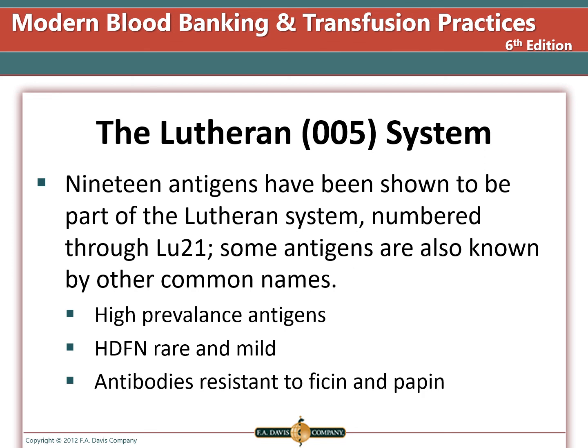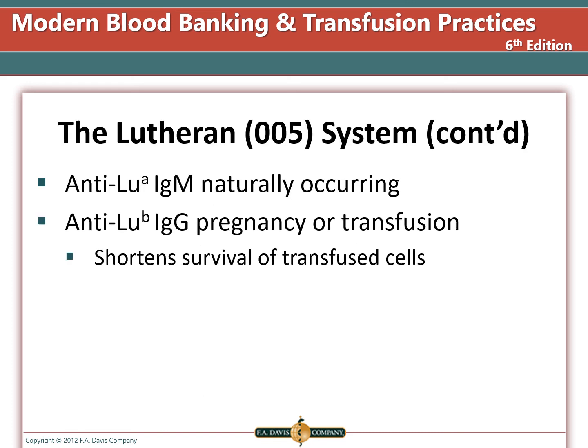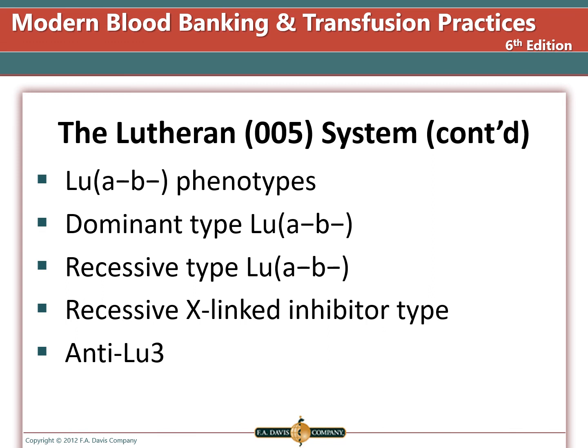The Lutheran system has 19 antigens, mainly high-prevalence. Lutheran A is a low-incidence antigen and Lutheran B is a high-incidence antigen. Hemolytic disease of the fetus and newborn is rare and mild. The antibody is resistant to enzymes. Anti-Lutheran A is a naturally occurring IgM antibody; anti-Lutheran B is an IgG antibody induced by pregnancy or transfusion and will shorten the survival of transfused cells. A Lutheran A-negative, B-negative phenotype can be caused by a dominant gene, recessive genes, or a recessive X-linked inhibitor — these individuals can make anti-Lutheran 3, which reacts with all cells except the Lutheran null phenotype.